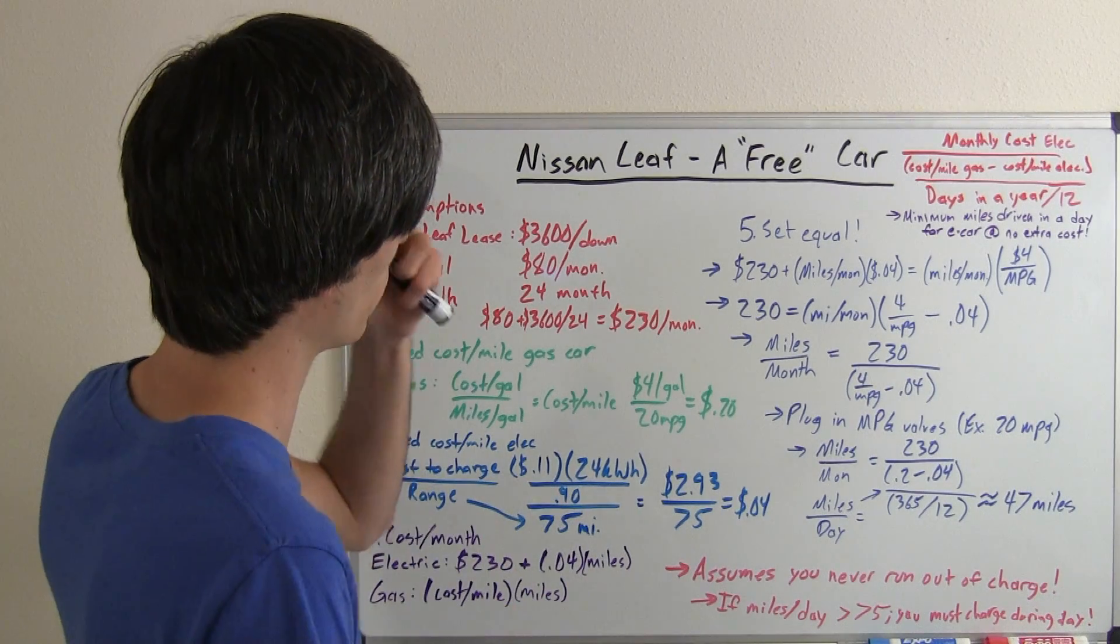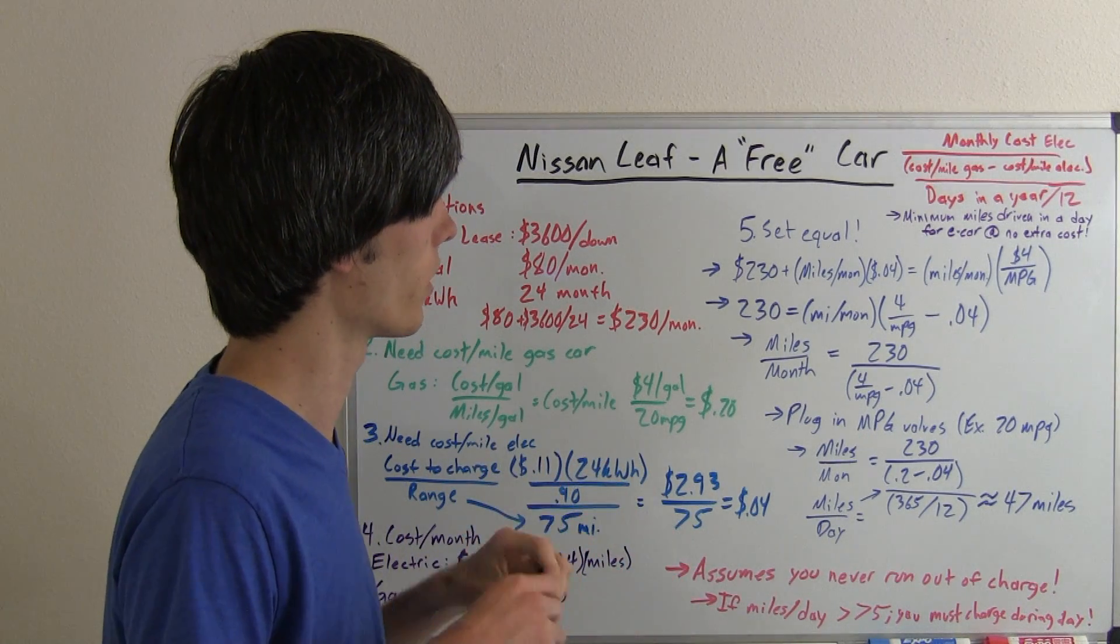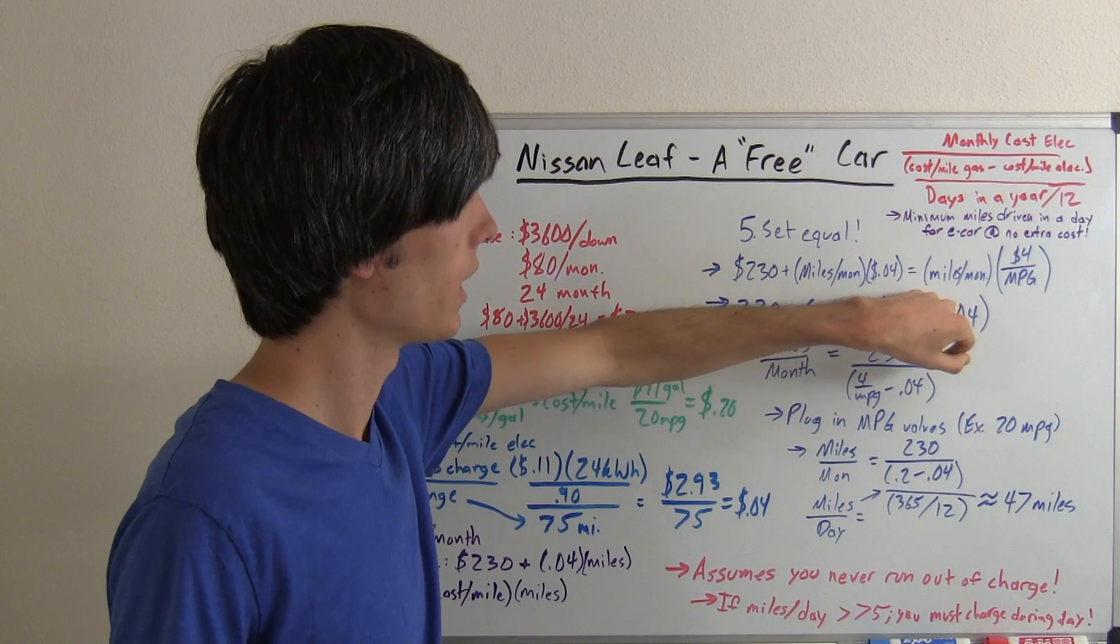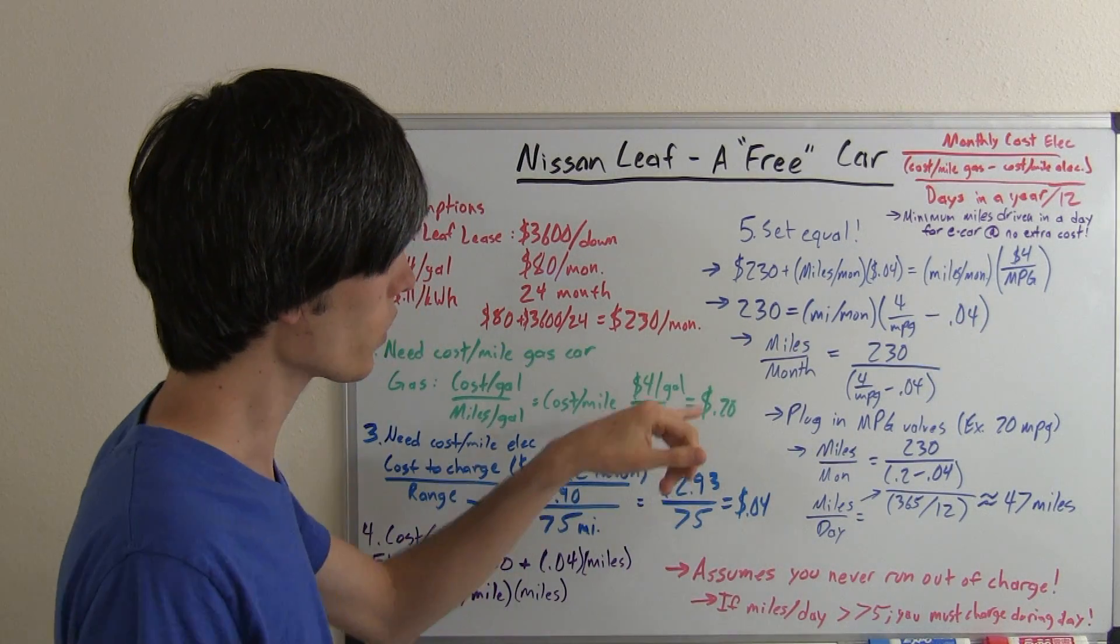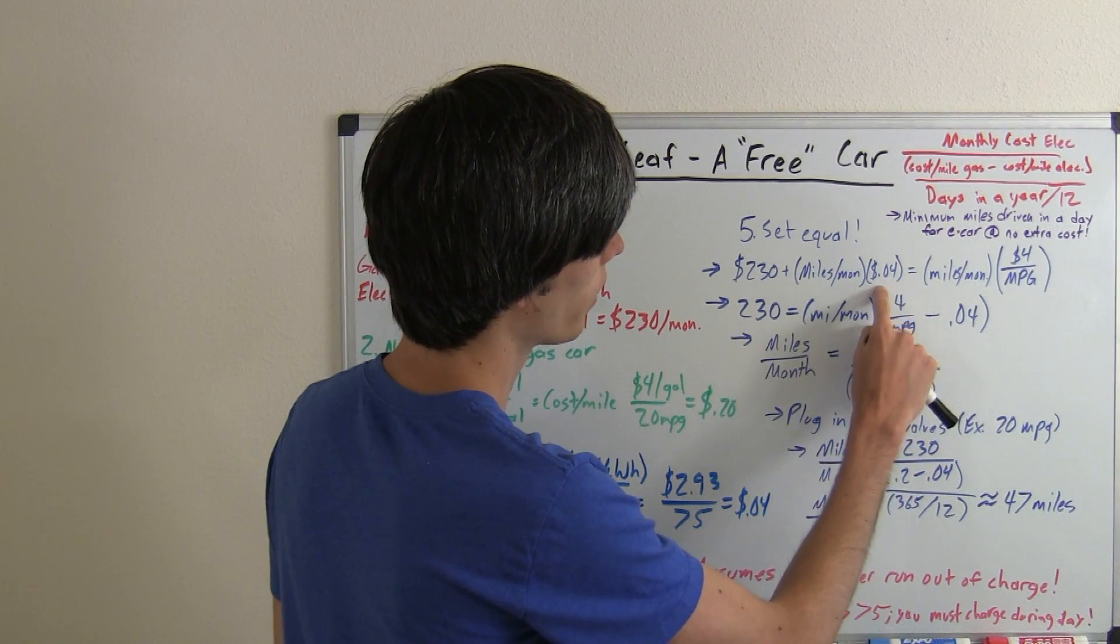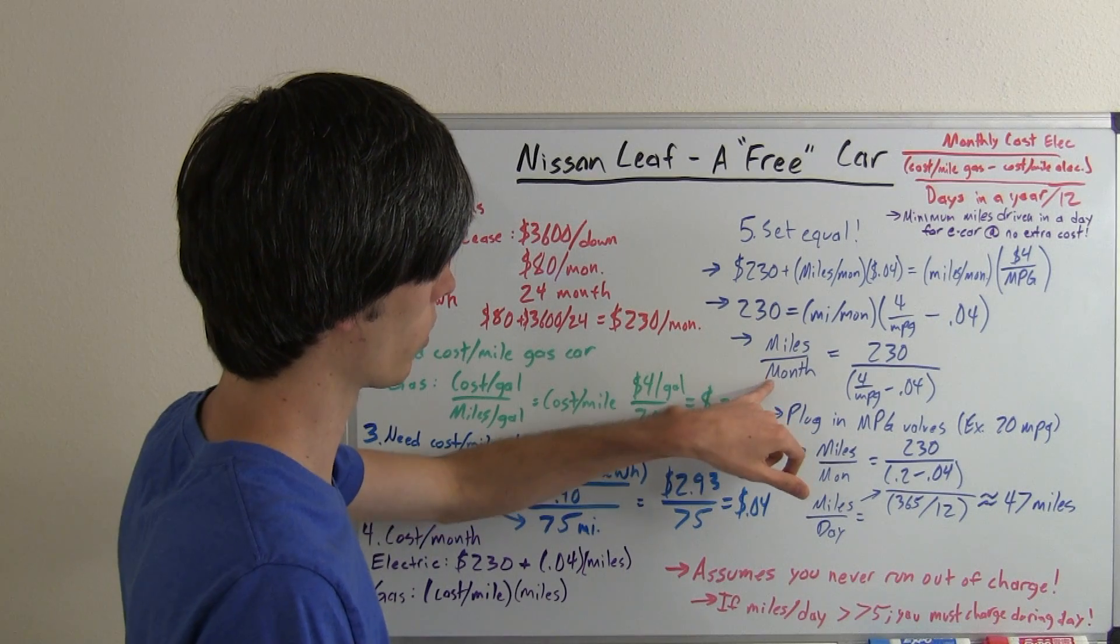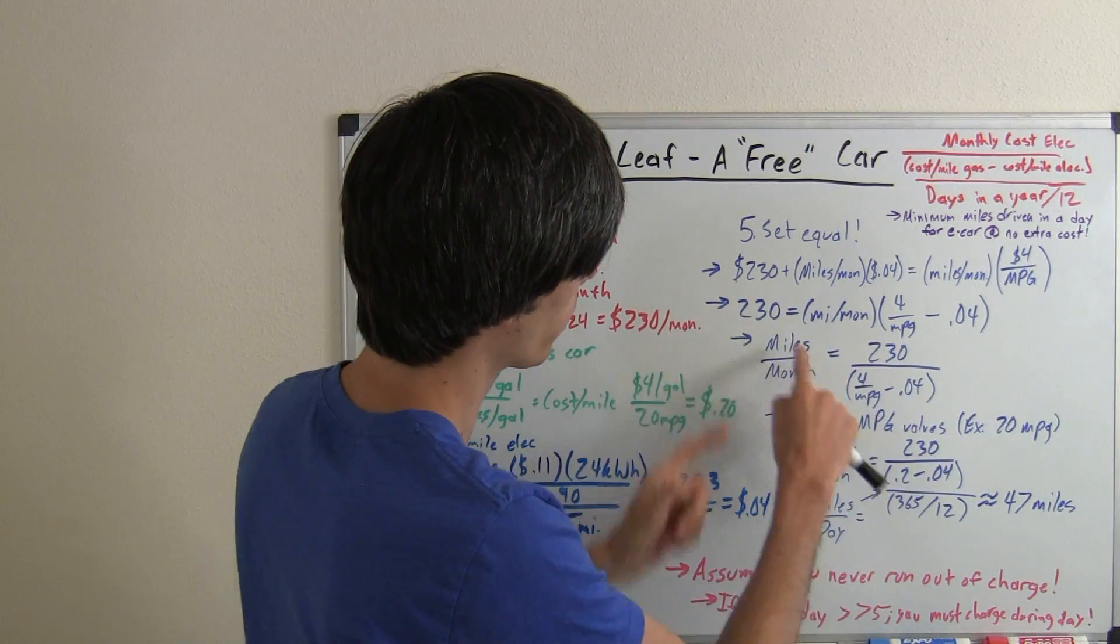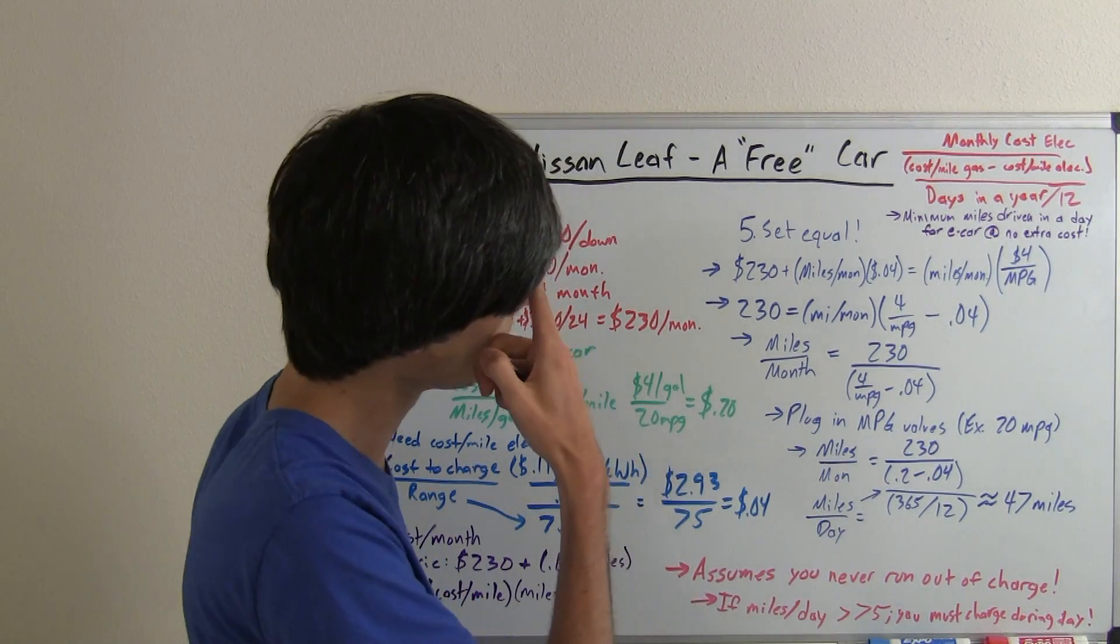Let's set these two equations equal. What that will do is give us the miles per month that we have to drive in order for the Nissan Leaf value proposition to work out. So, 230 plus the miles per month times 4 cents, equal to miles you drive in a month times $4 divided by your current car's miles per gallon. We're going to move all this over to the other side, so that's going to give us 230 equals the miles per month times this minus this. So the miles per month that we have to drive in order to have this car be free, no additional cost, is 230 divided by 4 divided by your current car's miles per gallon, minus 4 cents per mile for the electric vehicle.